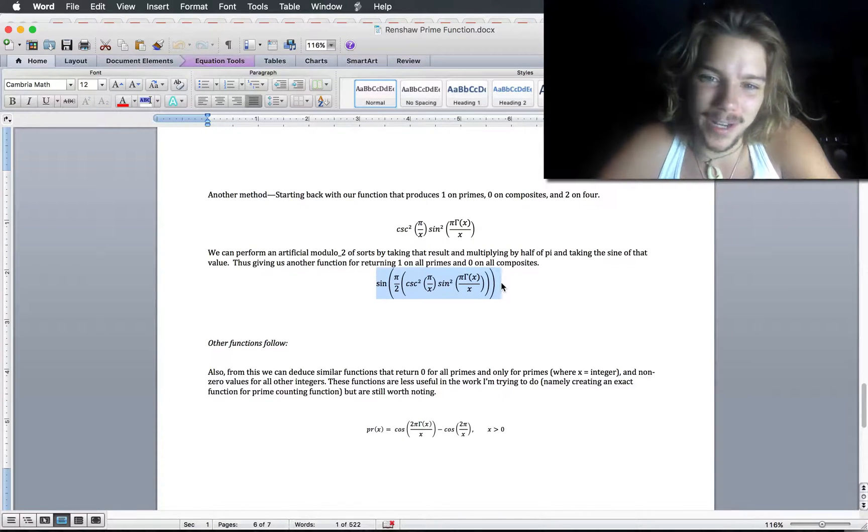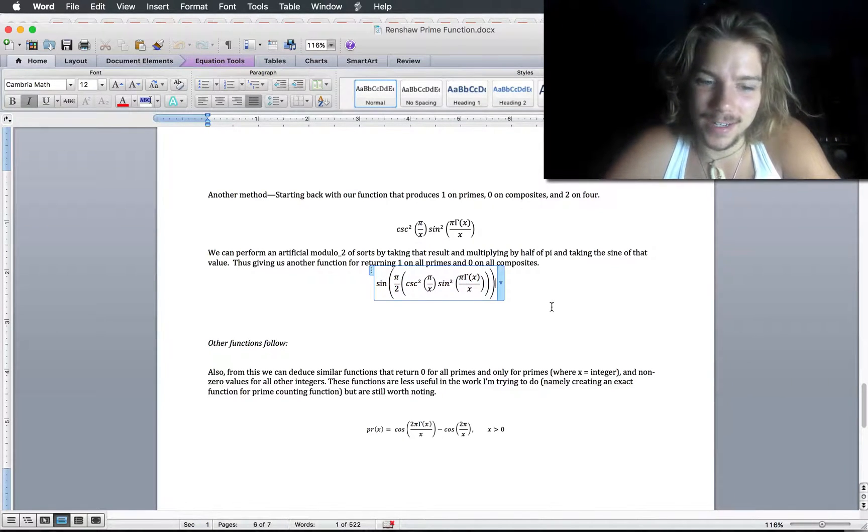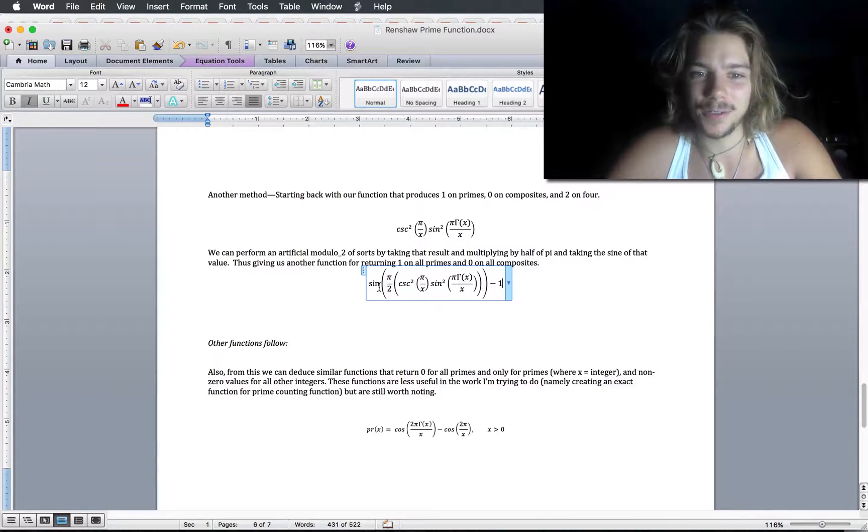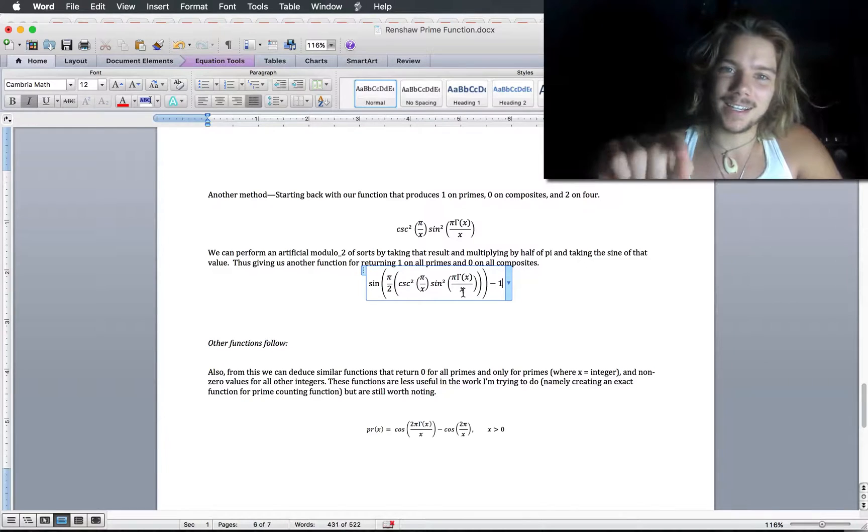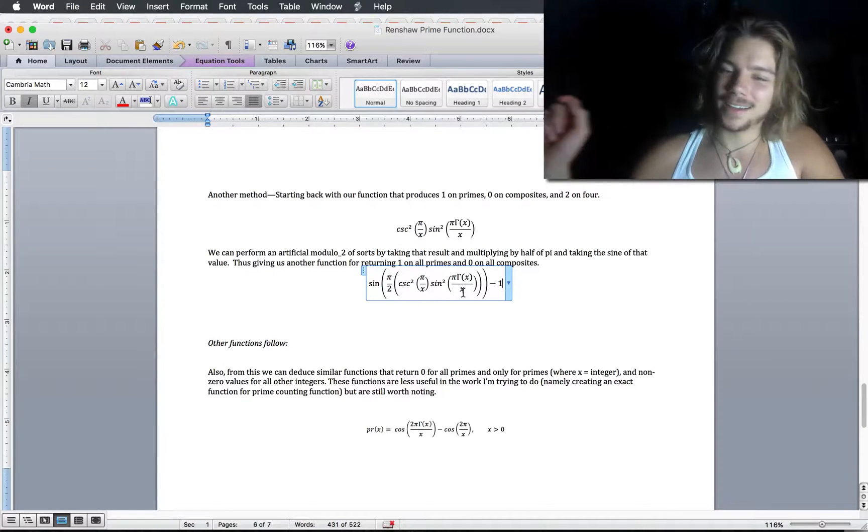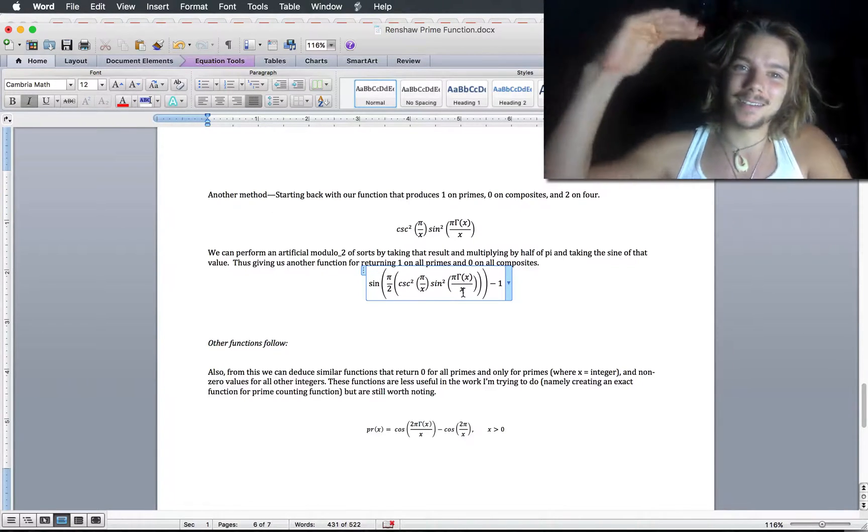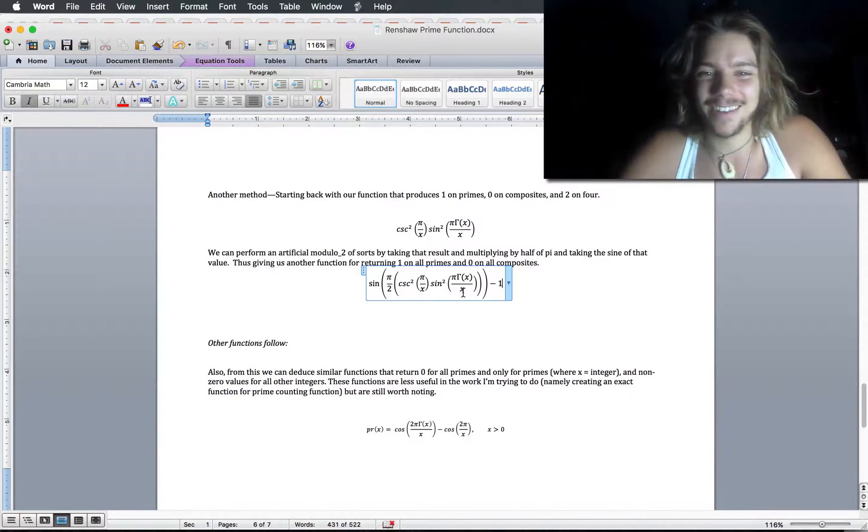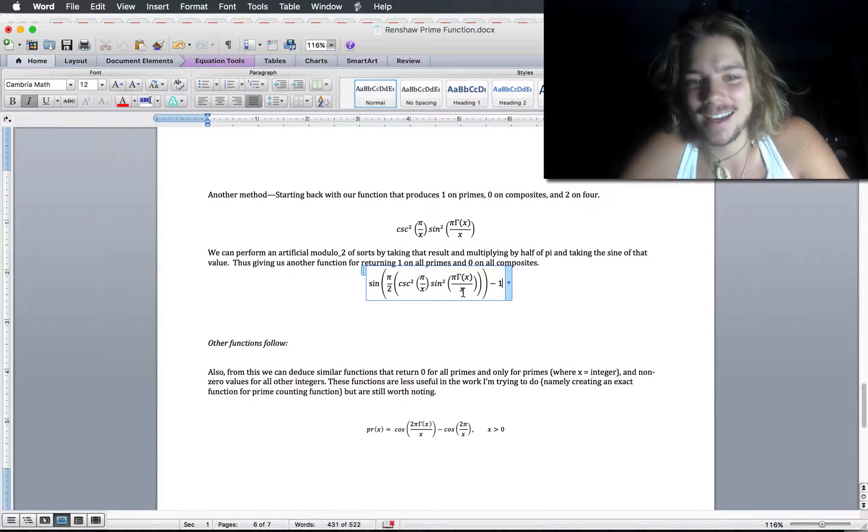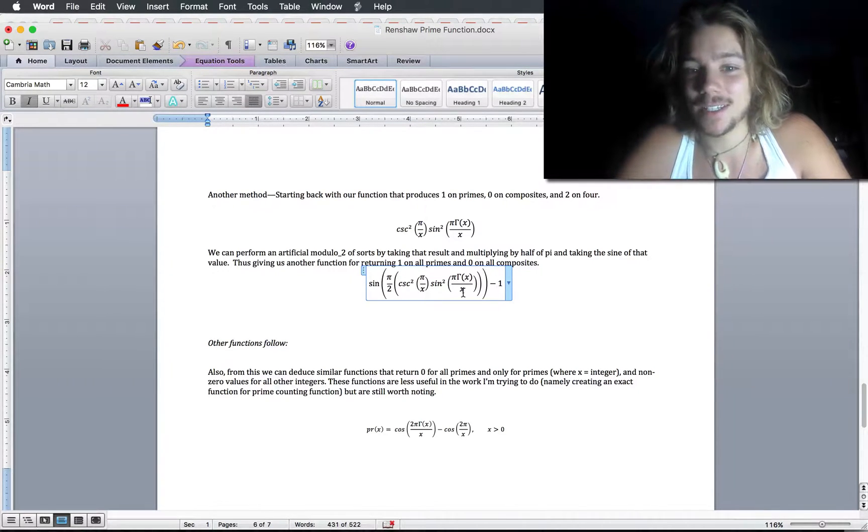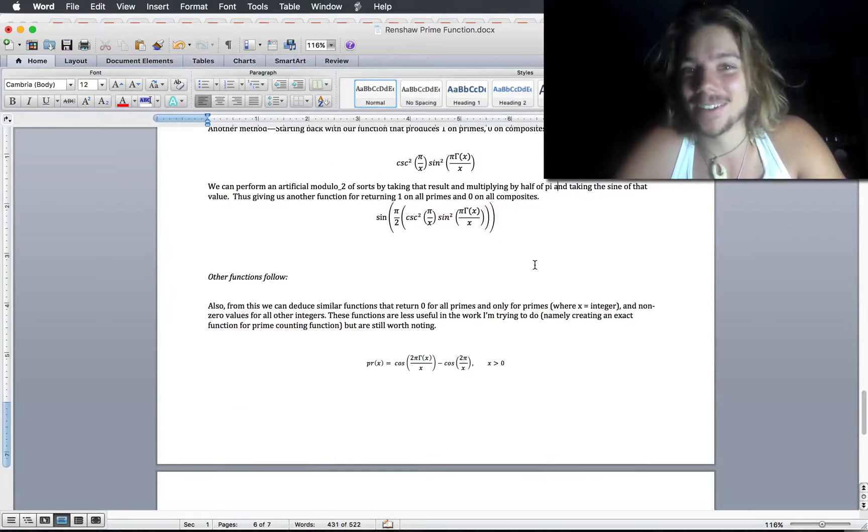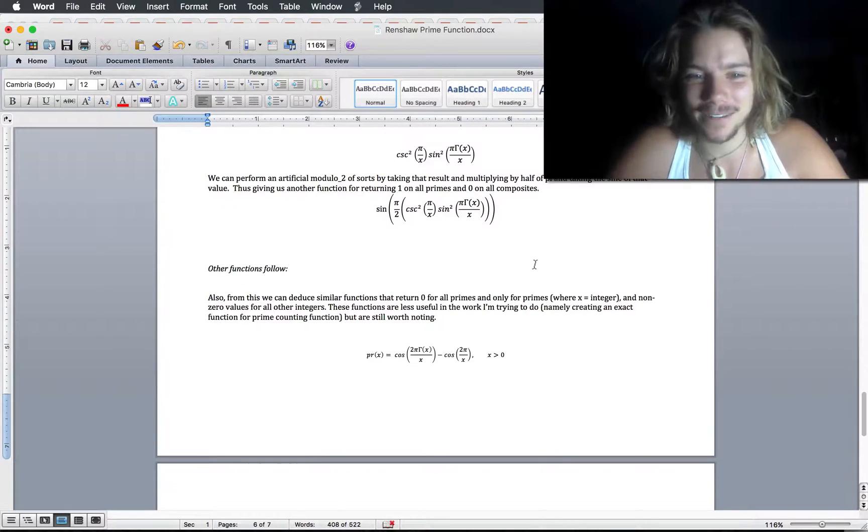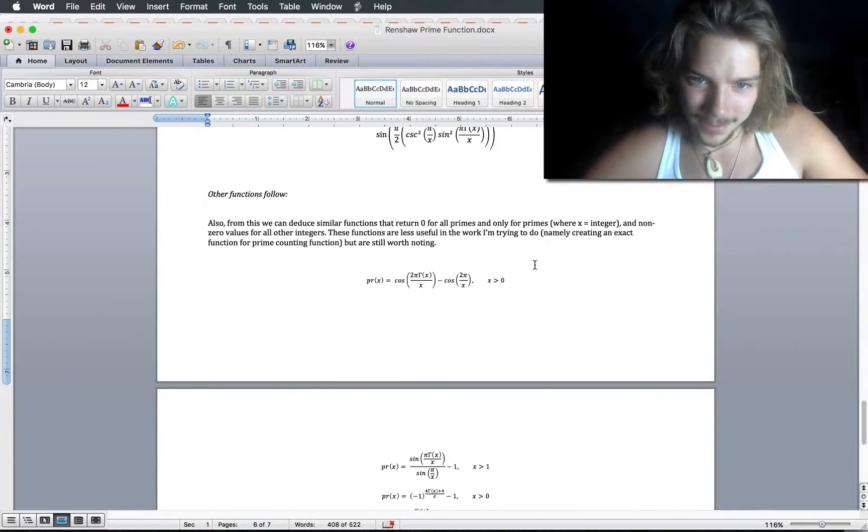And of course, if you just subtract 1 from this function at the very end, we now have a function whose solutions, or when it hits the x-axis, it only hits the x-axis on primes. And it will hit y equals 1 on composites. Should be noted this involves integers. If you use floating values, you'll probably hit it at other places as well. Those numbers aren't prime, obviously, because primes have to be integers by the current definition.